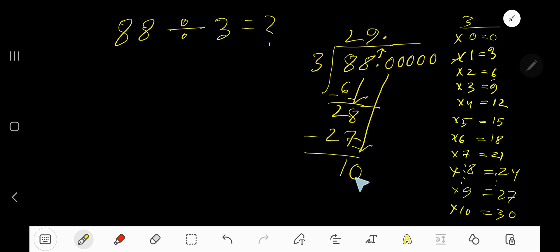3 goes into 10 how many times? 3 times. 3 times 3 is 9. Write 3. Subtract to get 1. Bring down the next zero. 3 goes into 10 how many times? 3 times. 3 times 3 gives you again 9. Subtract to get 1.